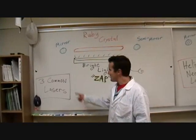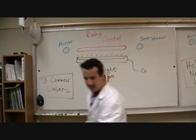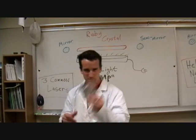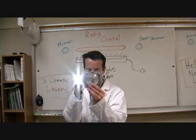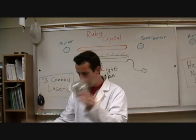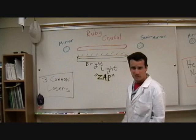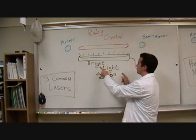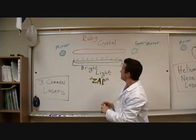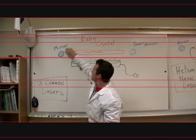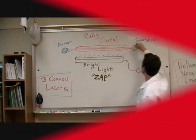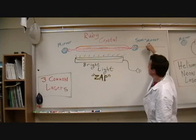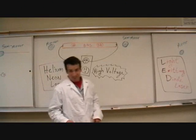There are three very common types of lasers, but they all have one design — each one has a mirror and a semi-mirror, which is partially transparent. The first type of laser was the ruby crystal laser. You take a ruby crystal, like this one, and you zap it with a very bright light. That causes it to emit red light. The red light bounces back and forth between the mirrors, stimulating emission more and more, brighter and brighter, until it eventually emerges in a straight line from the semi-mirror.